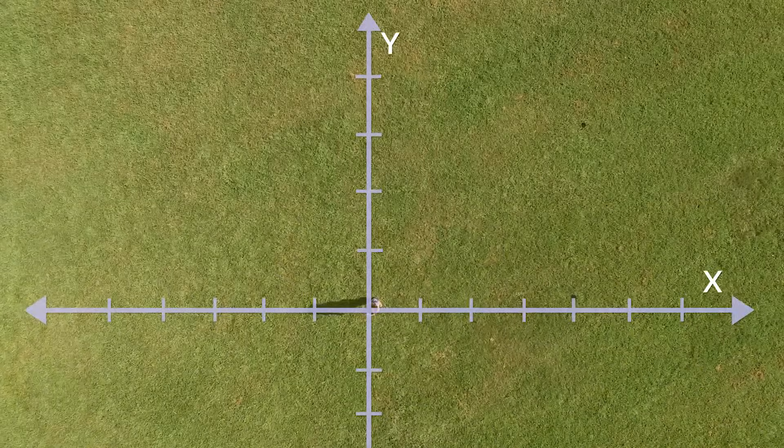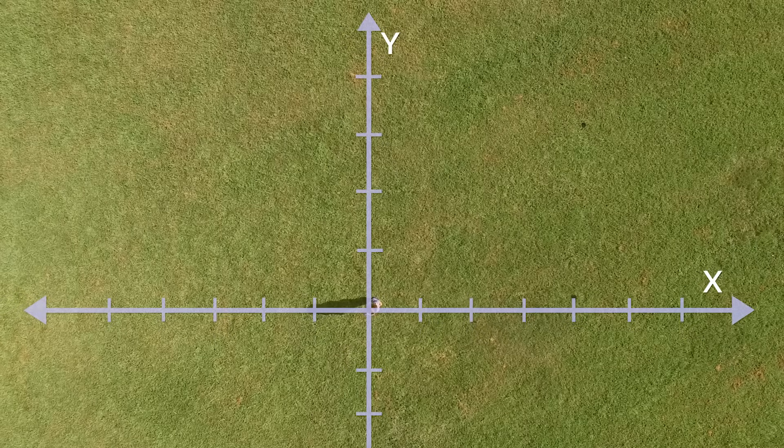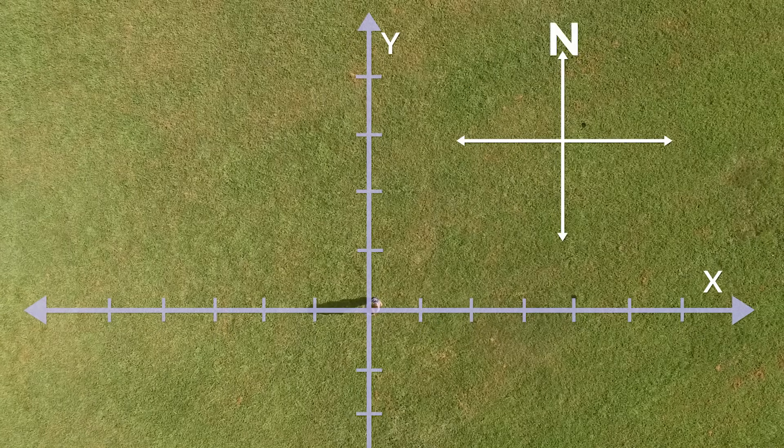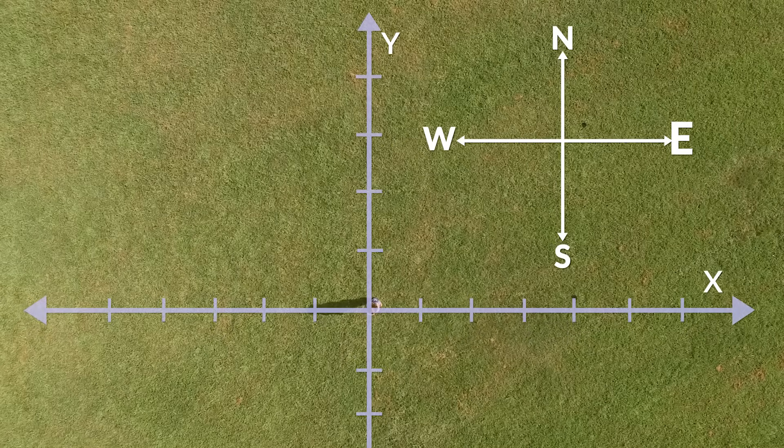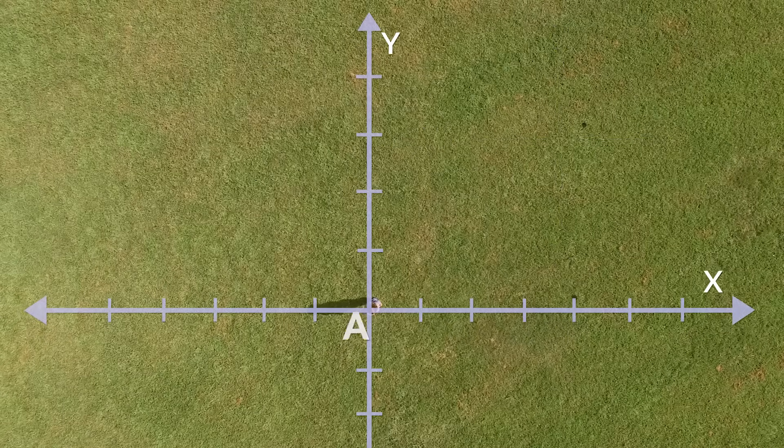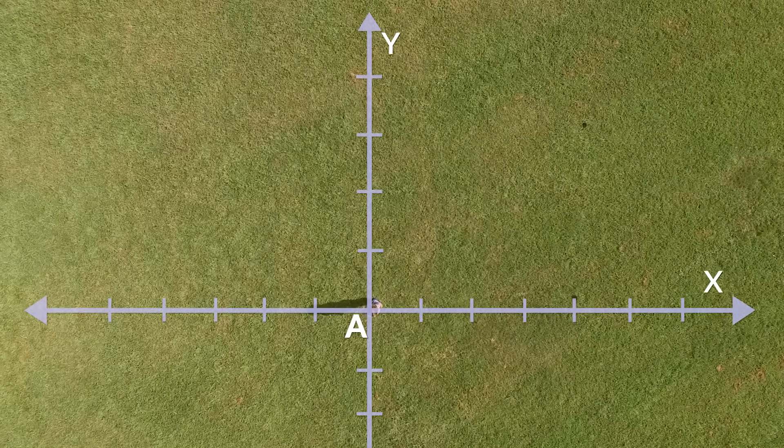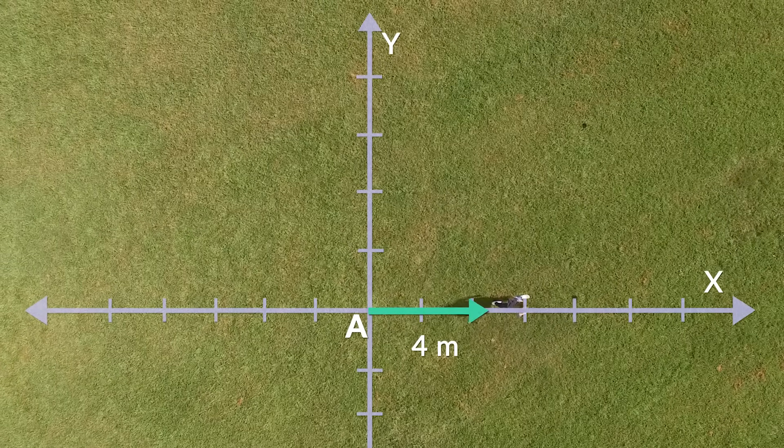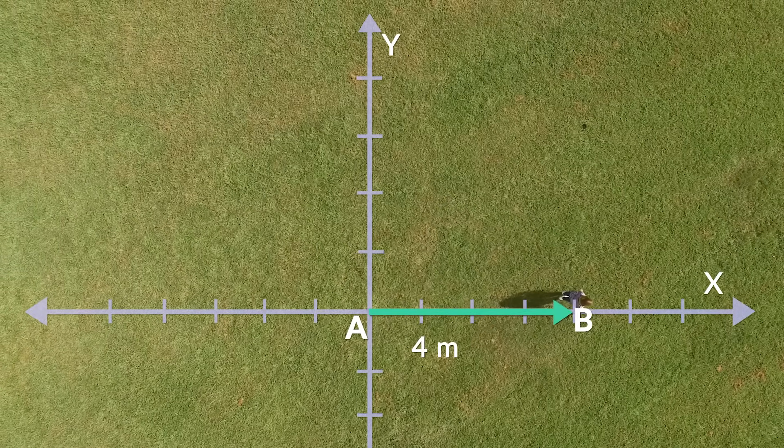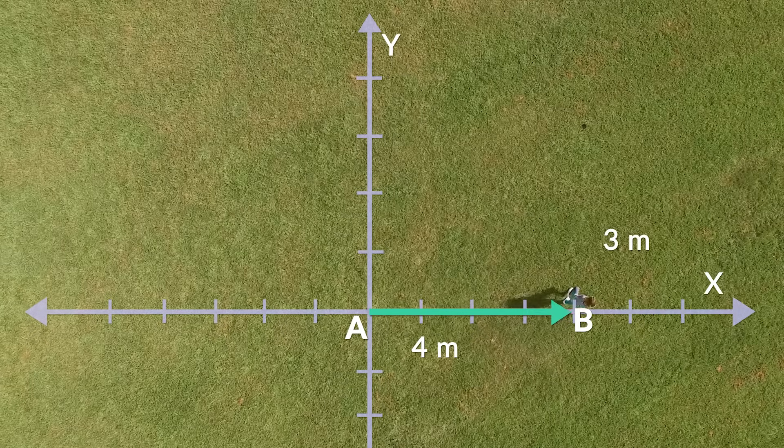But enough with number lines. Let me demonstrate using a grid. Where I'm standing right now is my starting point, or my origin. On this grid, north is up, west is to the left, south is down, and east is to the right. Let's call the origin point A on the grid. I'm going to move four meters to the right, or eastward, to what we can call point B. Next, I'm going to move three meters north to what we can call point C.